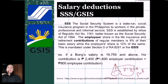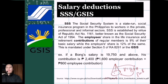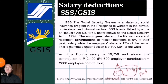Next, we have salary deductions for SSS and GSIS. Both are insurance bodies. The Social Security System is a state-run social insurance program for workers in the private, professional, and informal sectors, established by Republic Act 1161 or the Social Security Act of 1954. GSIS is under Republic Act 8291 and covers government workers — members share 9% of their basic salary while the employer shares 12%.